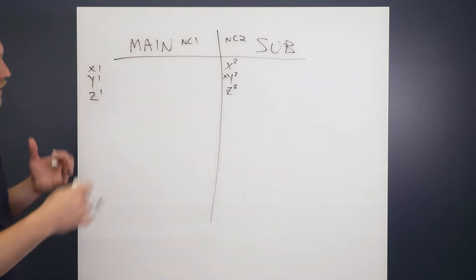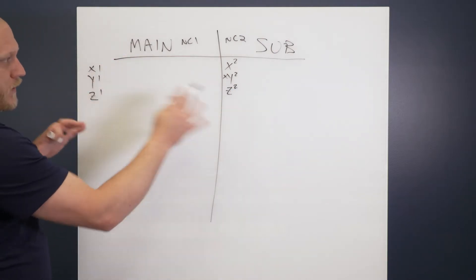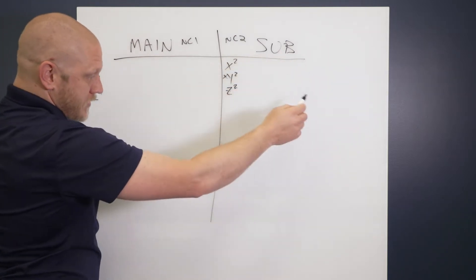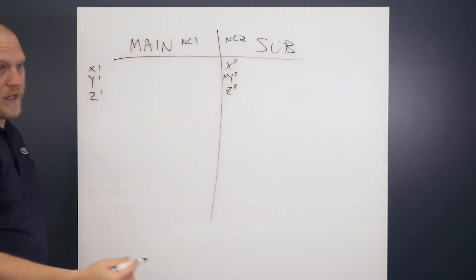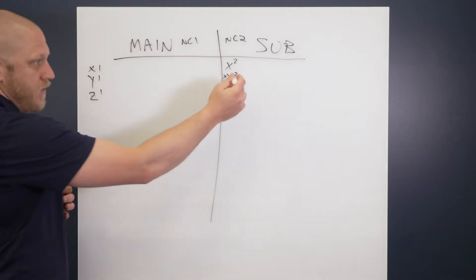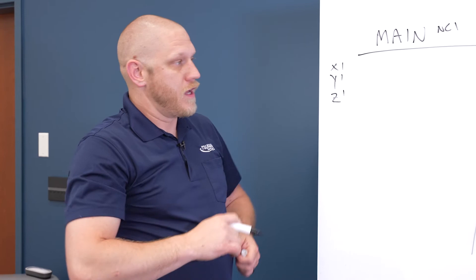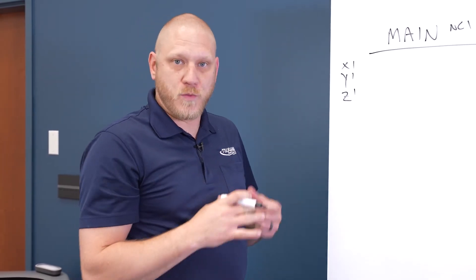Regardless, you need to communicate between these two because this side is running its own program while this side is also simultaneously running its own program. Without communication, these axes can run into each other and you can cause a collision. So the way we prevent that is with weight codes.